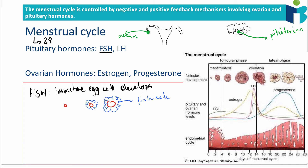The follicle cells release estrogen, so FSH has a positive feedback effect on estrogen because it stimulates its production. On the graph, FSH increases from day zero — the first day of bleeding — and as FSH levels rise, more estrogen is produced. However, estrogen has a negative feedback mechanism on FSH: when estrogen is released, it blocks the pituitary from releasing more FSH, so FSH levels go down.